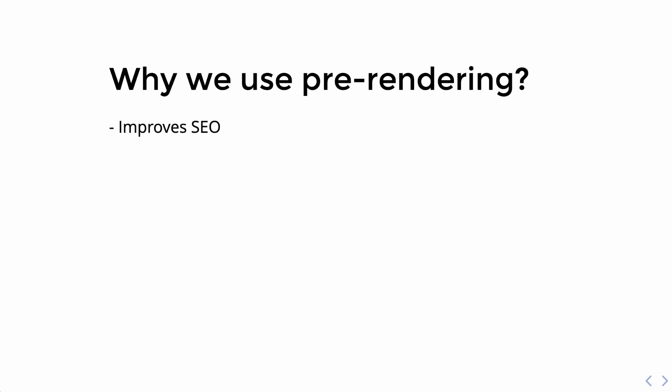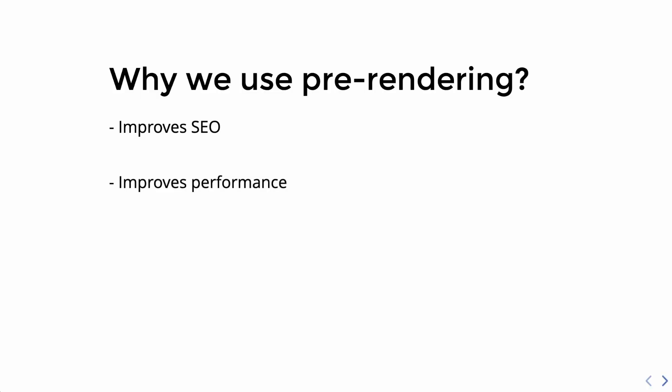Why would we use pre-rendering? There are a couple of benefits. First, it improves your site's SEO — so if you are building a blog, an e-commerce site, or a marketing site, good SEO is really important. Second, it improves performance. With a normal React application without pre-rendering, the user first downloads the minimal HTML alongside the whole JavaScript bundle, then the bundle needs to be executed, and only then the UI is rendered — meanwhile the user usually sees just a blank page. But with Next.js, every page is pre-rendered by default, the HTML is generated on the server side, making page load time much faster and user wait time much shorter.